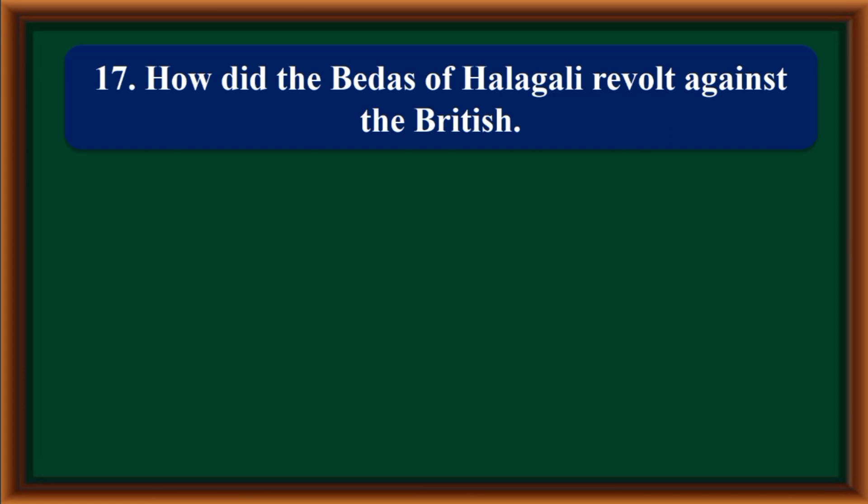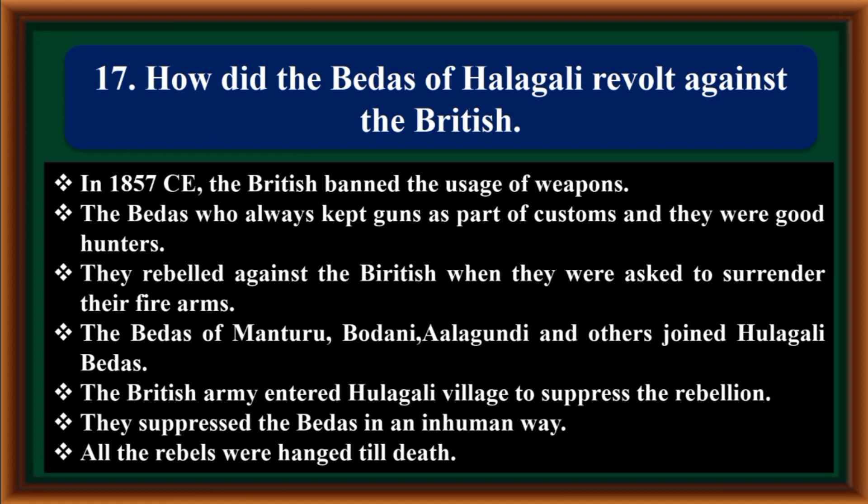How did the Bedas of Halagali revolt against the British? In 1857, the British banned the usage of weapons. The Bedas, who always kept guns as part of their customs and were good hunters, rebelled when asked to surrender their firearms. The Bedas of Manturu, Bodani, Alagundi and others joined the Halagali Bedas. The British army entered Halagali village to suppress the rebellion in an inhuman way; all the rebels were hanged till death.